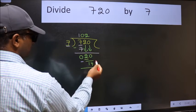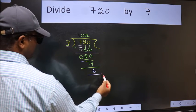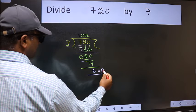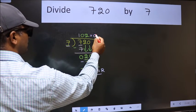No more numbers to bring down. So we stop here. This is our remainder and this is our quotient.